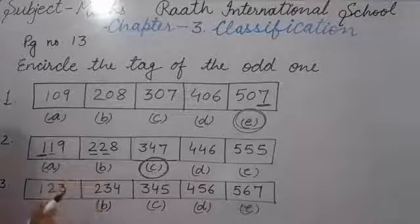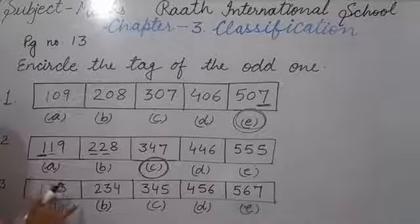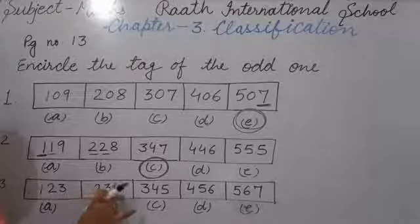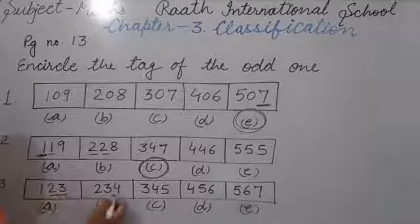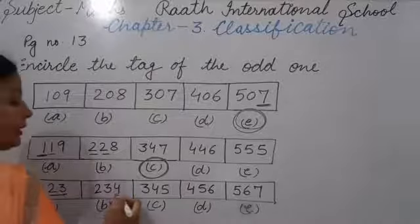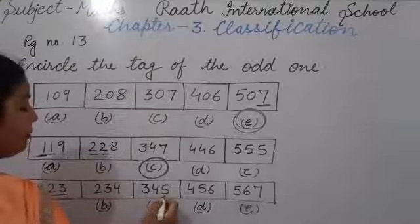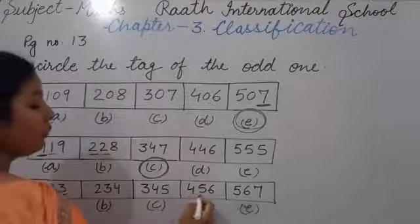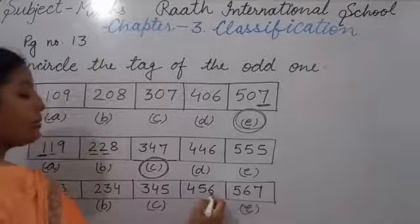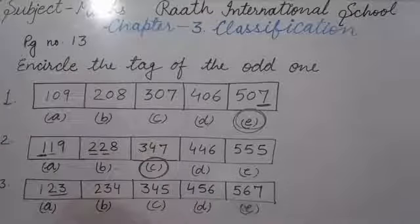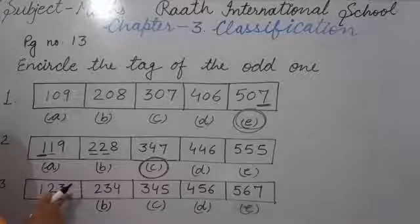Now third question: 123, 234, 345, 456, 567. From 2, we start: 2-3, same. Then 4, and 3-4 is same, then 5. All these are consecutive three-digit sequences. All are correct — no one is wrong. So we will not circle anyone because all are correct. This question is correct.